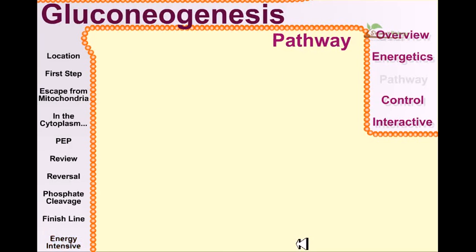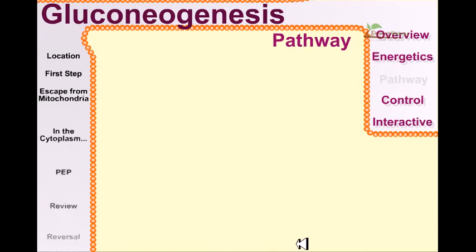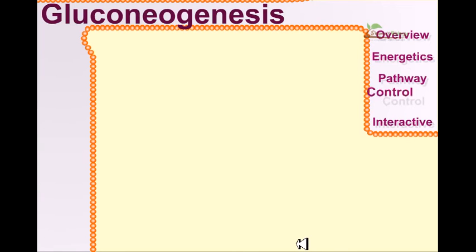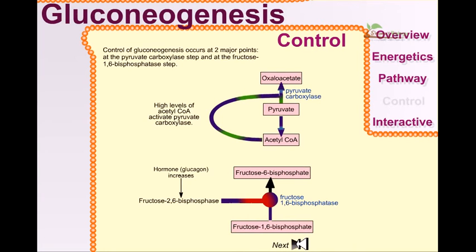From this picture, the control of gluconeogenesis occurs at two major points: at the pyruvate carboxylase step and at the fructose 1,6-bisphosphatase step.